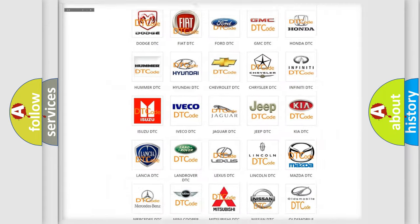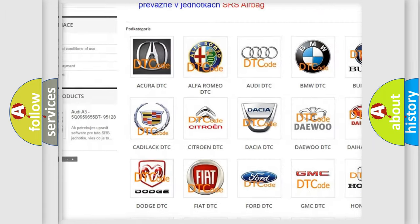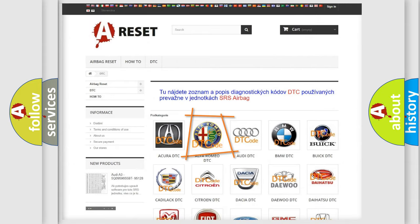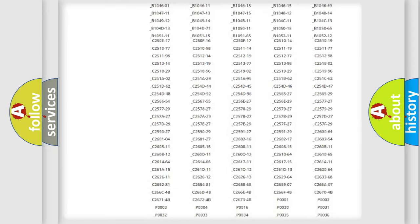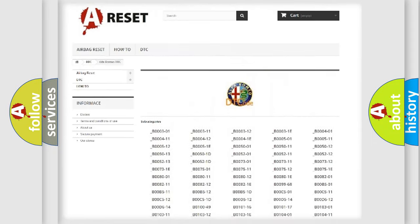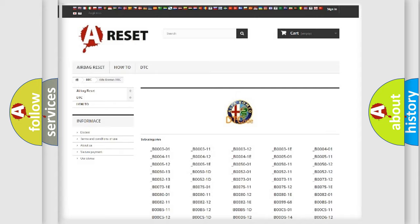Our website airbagreset.sk produces useful videos for you. You do not have to go through the OBD2 protocol anymore to know how to troubleshoot any car breakdown. You will find all the diagnostic codes that can be diagnosed in Alfa Romeo vehicles, and many other useful things.